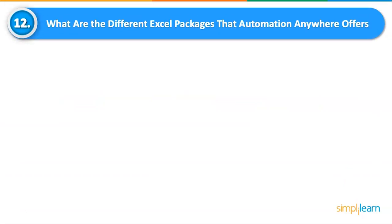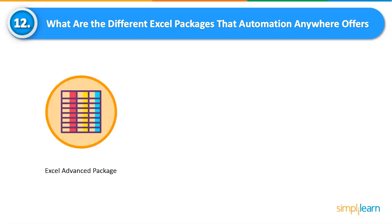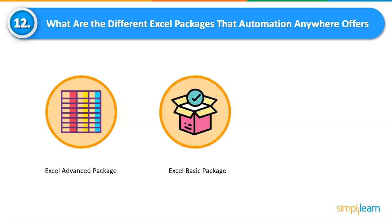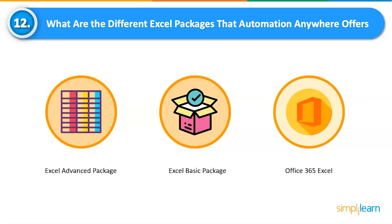What are the different Excel packages that Automation Anywhere offers? There are three packages. Excel Advanced Package: utilized to automate actions involving the workbook, worksheet, rows, columns, and cells — requires Microsoft Office 2016 to 2019 to be installed. Excel Basic Package: enables quick spreadsheet activities for .xlsx files without requiring MS Excel to be installed. Office 365 Excel: provides commands for working with Excel Online, allowing you to automate operations in Microsoft Excel Online via a web browser.